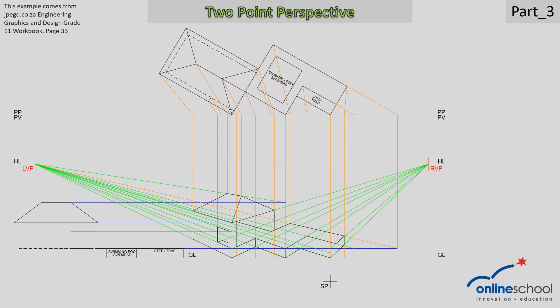We need to focus very closely at this intersection because we're going to project to the right vanishing point from that point a light construction line. Where it meets up with the line that came from the top, at that inside intersection, we're going to project to the left vanishing point to create the constructions for the profile of the steps. Now that we have all the constructions we need, we're going to draw in solid the profile of the step area on the right hand side.